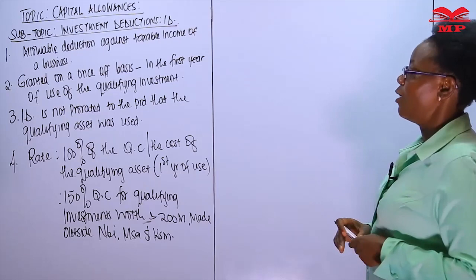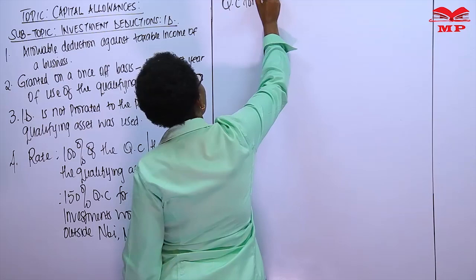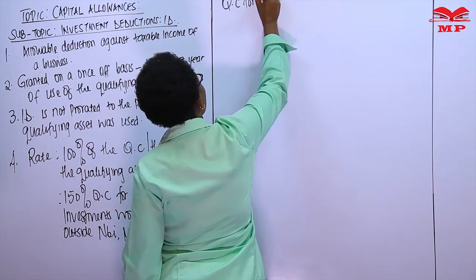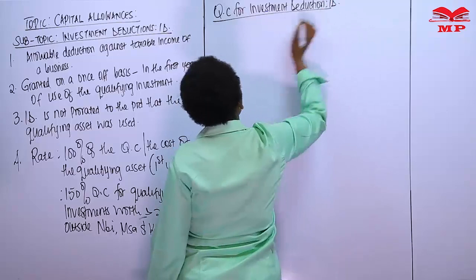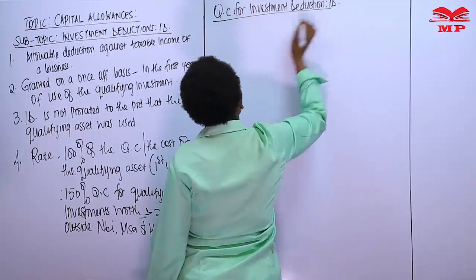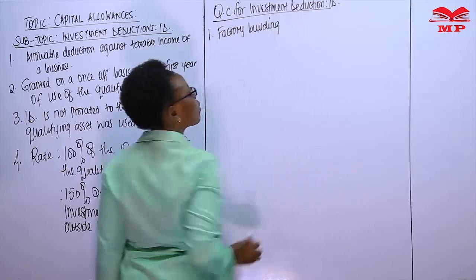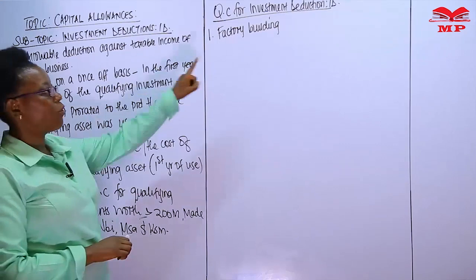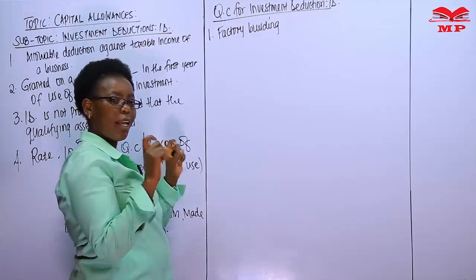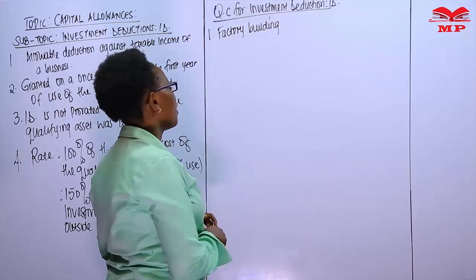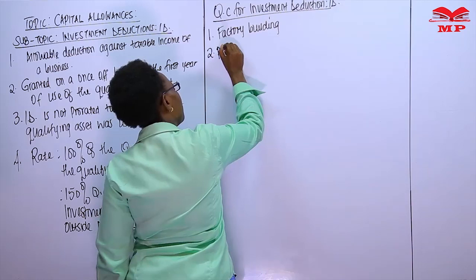We want to look at the qualifying cost for investment deduction (ID). Number one is the cost of a factory building. Under fiscal policy measures, we want to attract local and foreign investments. So the incentive is that any time you put up a factory building — say you spend 100 million — in the first year you claim that amount to reduce your taxable income.